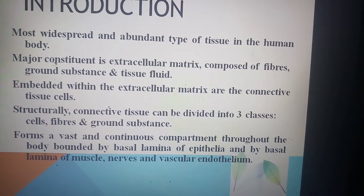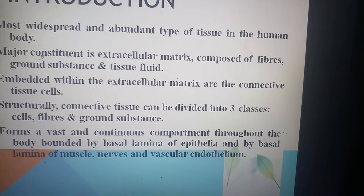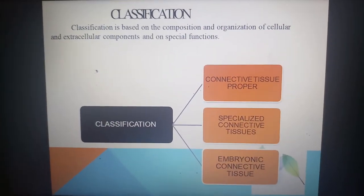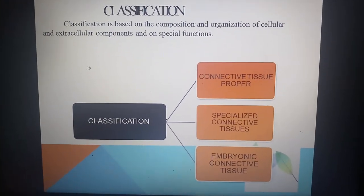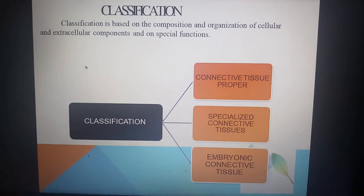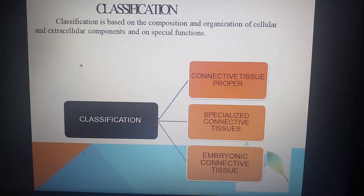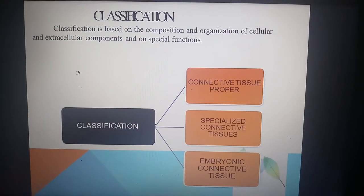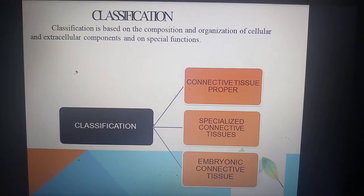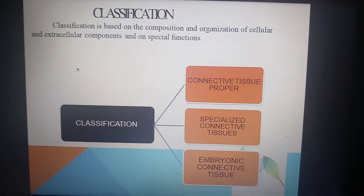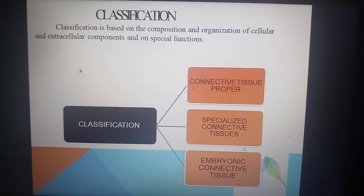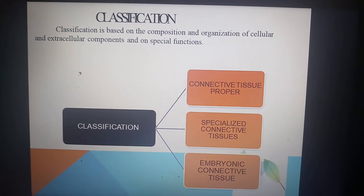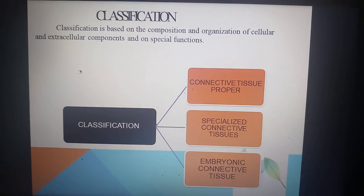Connective tissue forms a vast and continuous compartment throughout the body, bounded by the basal lamina of epithelia, muscle, nerves, and vascular endothelium. Classification of connective tissue is based on the composition and organization of cellular and extracellular components and on special functions. It is mainly classified into three types: connective tissue proper, specialized connective tissue, and embryonic connective tissue.